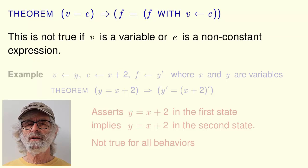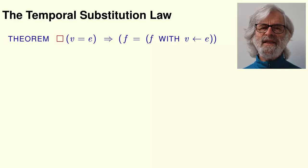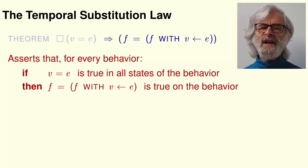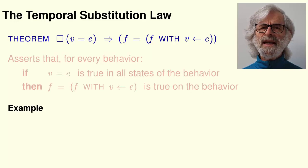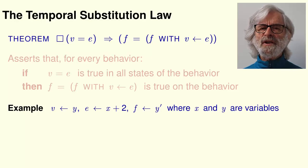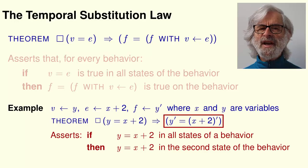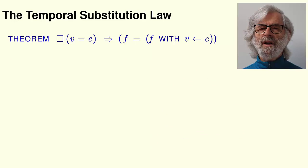The law is not true if v is a variable or e is a non-constant expression. To obtain the substitution law for temporal logic — the temporal substitution law — we change the simple substitution law by adding the always operator. The law now asserts that for every behavior, if v equals e is true in all states of the behavior, then f equals f with e substituted for v is true on the behavior. In our example, the law asserts that if y equals x plus 2 in all states, then y equals x plus 2 in the second state, which is obviously true of all behaviors.